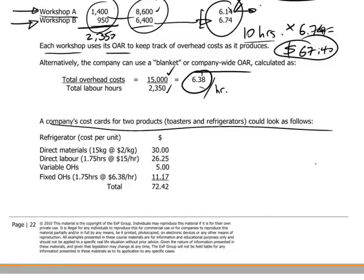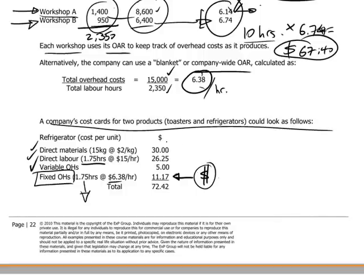The cost card for a fridge will have direct materials, direct labor, and variable overheads — all variable costs directly connected to the level of output, on a cost per unit basis. Direct labor to produce one fridge requires a standard of 1.75 hours. Therefore, when we include the fixed overheads on the cost card, we take the standard time of 1.75 labor hours and multiply it by the company-wide overhead absorption rate of $6.38, to determine the dollar amount of fixed overheads absorbed by one unit of refrigerator. This is the fully absorbed, full production absorption costing method.